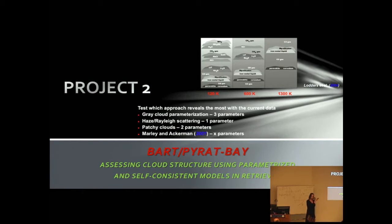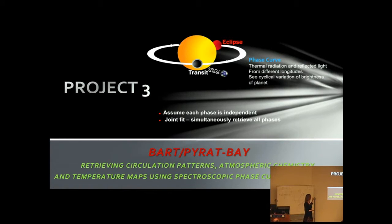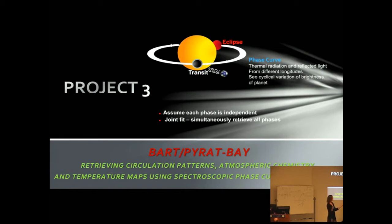What I wanted to do is implement different parameterization methods, starting from the very basic ones to the more complicated ones, and trying to figure out which of these approaches will give us the most with the current data that we have, and which will give us the most with future JWST data. What I also wanted to do is use some phase curves, because phase curves are giving us the most comprehensive information. I wanted to use the phase curve observations, engaging each of the phases independently, or doing a joint fit where we simultaneously retrieve all of the phases.